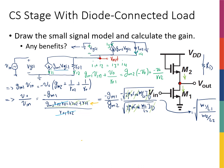This approach doesn't work with BJTs. If you replace M1 and M2 with BJTs, you still get a gm1/gm2 ratio, but for a BJT, gm = Ic/Vt. Since both transistors have the same Ic and Vt, the ratio becomes unity — the gain is always one, which is not useful as an amplifier and provides no control over gain. That's why we don't use this configuration for BJTs.